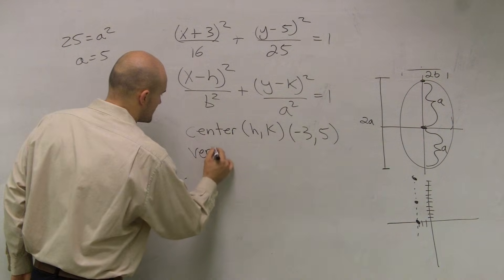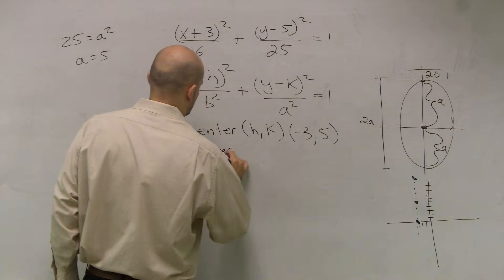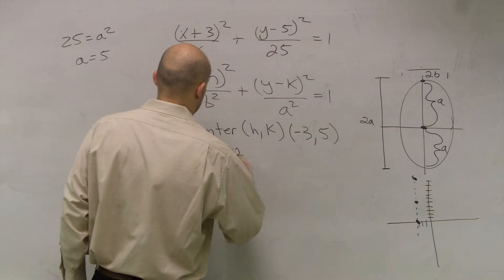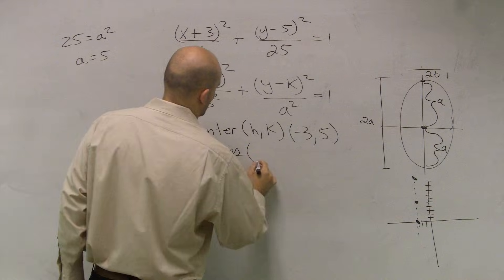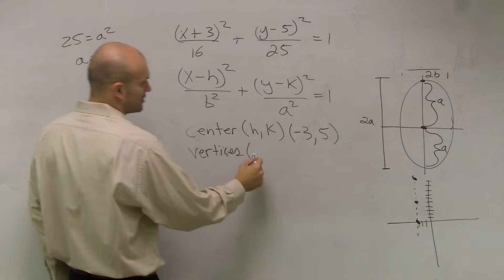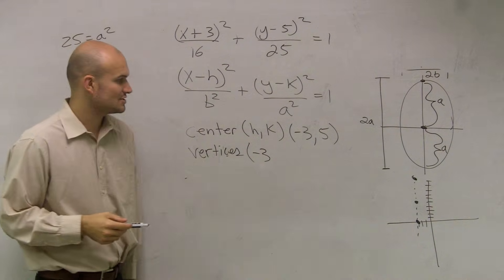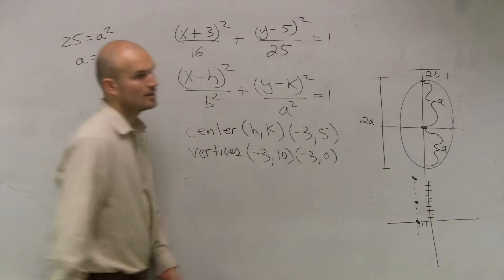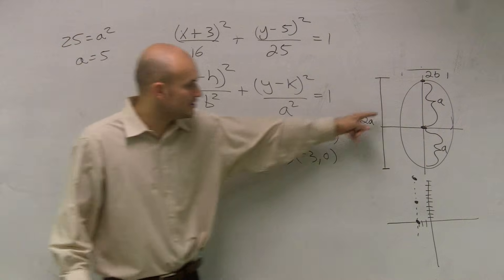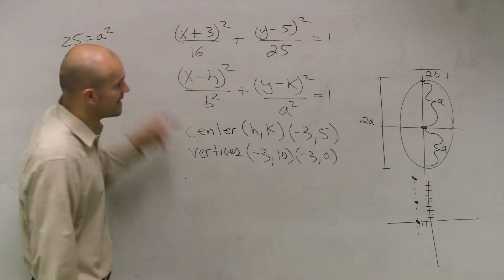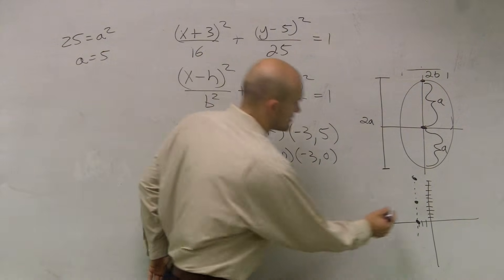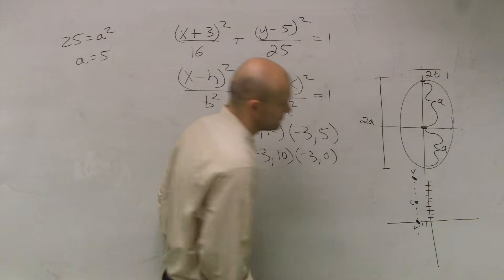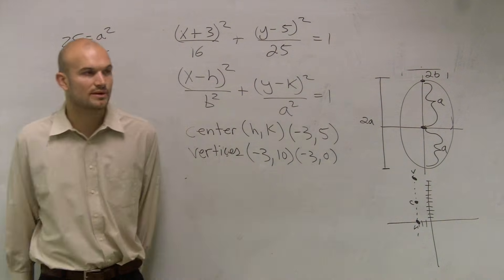So my vertices are going to be at, they're still going to be negative 3, the h coordinate did not change, but now I'm going to have negative 3 comma 10 and negative 3 comma 0, plus or minus 5. I found the value of a, which is 5, and I added it and I subtracted it. So here's my center, here's my vertices, and there's my vertices.